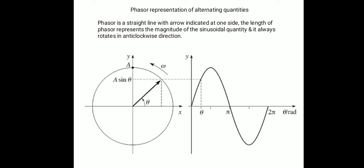The length of the phasor represents the magnitude of the sinusoidal quantity — specifically, the length of the phasor is equal to the peak value of the sinusoidal quantity. On the right hand side of the slide is the waveform representation, and on the left hand side is the phasor representation. The phasor always rotates in the anticlockwise direction.